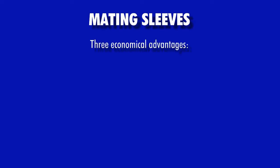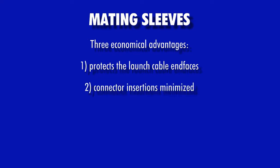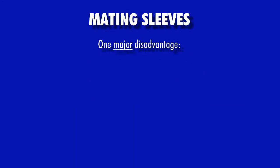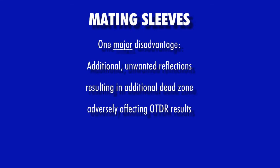One method of making OTDR launch cables more economical is to include mating sleeves on the ends of the launch cable. Mating sleeves offer three economical advantages: first, the end faces are somewhat protected from damage due to debris; second, connector insertions are kept to a minimum; and third, adapter patch cables convert to whatever connector type is installed in the near-end patch panel. On the other hand, there is one major disadvantage: the addition of a mating sleeve at the end of the launch cable produces an unwanted reflection point immediately prior to the near end of the link under test, resulting in additional dead zone for the OTDR to overcome, adversely affecting OTDR test results.